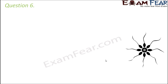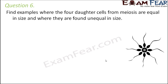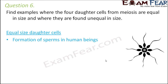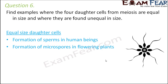Question number 6: Find examples where four daughter cells from meiosis are equal in size, and where they are unequal in size. Equal size daughter cells — for example, formation of sperms in human beings (spermatogenesis): all sperms are equal in size. Also, formation of microspores in flowering plants — male gametes are microspores because they are smaller in size, and they are all equal in size.